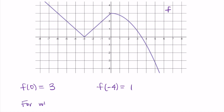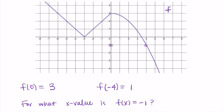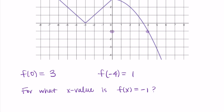Let's change it up: for what x value is f of x equal to negative one? Now I'm trying to find the input x that goes with f of x equals negative one. I think of negative one as an output, so I find negative one on the y-axis and see which x value goes with it. On the graph, there's a point at (4, −1), so x equals four is my answer.